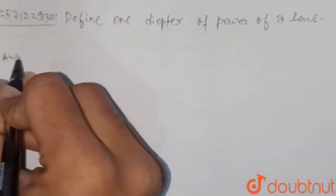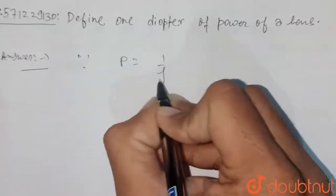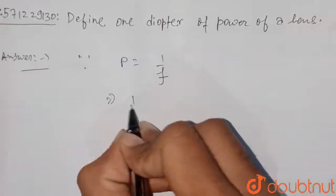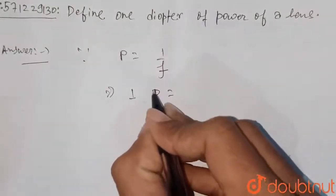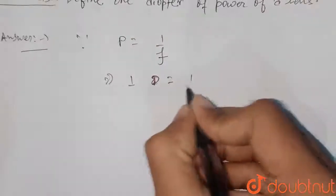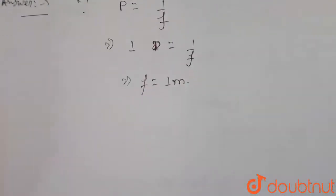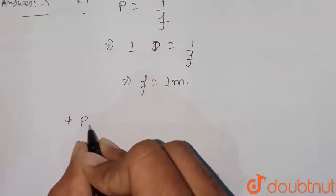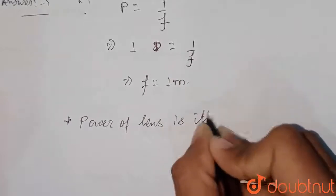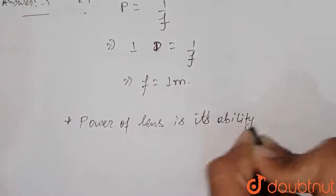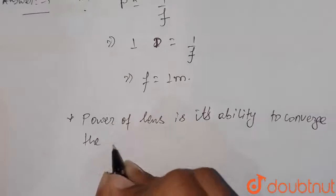Since power is equal to 1 divided by focal length, if power equals 1 diopter, then 1 divided by focal length equals 1, which implies focal length equals 1 meter. Theoretically, the power of a lens is its ability to converge the rays of light.